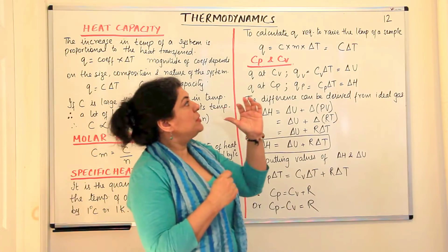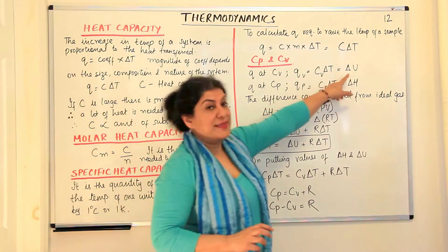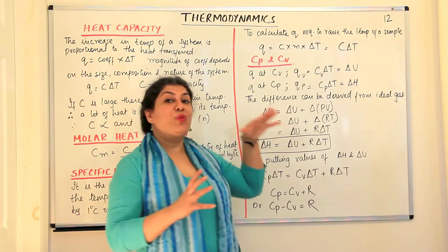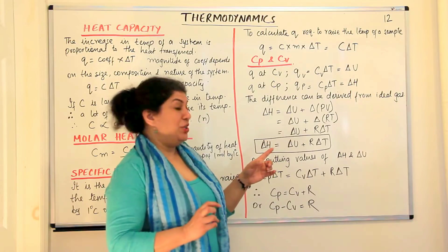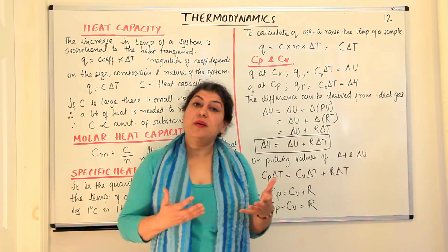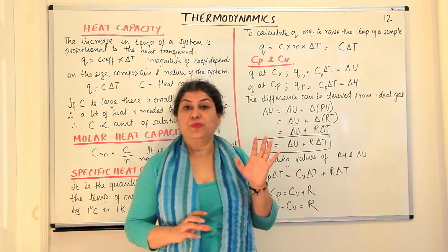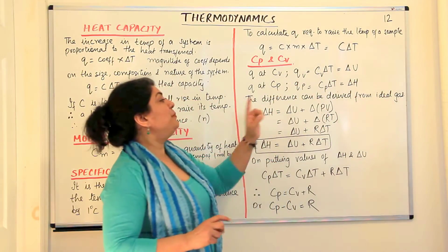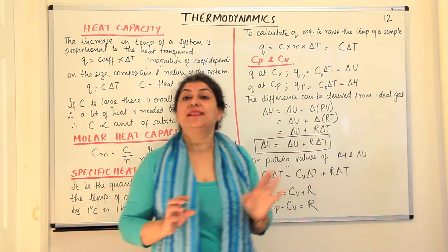In video number 10, we established that Qv equals delta U — the change in internal energy — and Qp equals delta H, the enthalpy change. Therefore, Cv delta T equals delta U and Cp delta T equals delta H. If you haven't watched part 10, I encourage you to do so as it makes this absolutely clear.